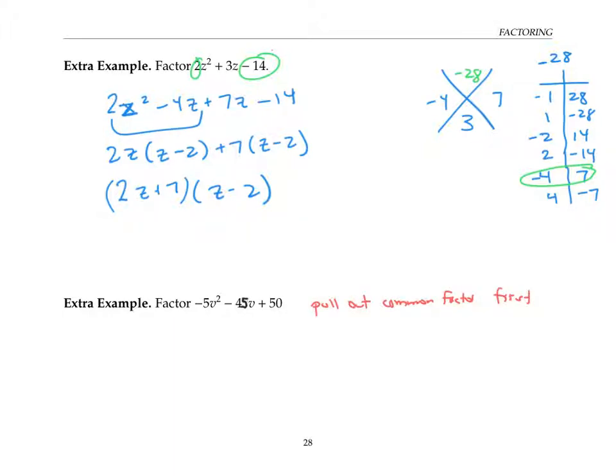Again, it would work if I forgot to do this, but it would be a lot more complicated. So negative five times v squared, this becomes minus, this becomes plus nine v, since nine times negative five is negative 45. And this becomes minus 10, since negative 10 times negative five is positive 50.